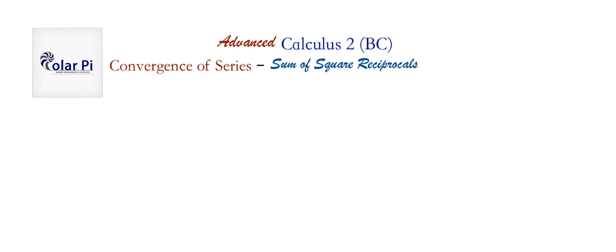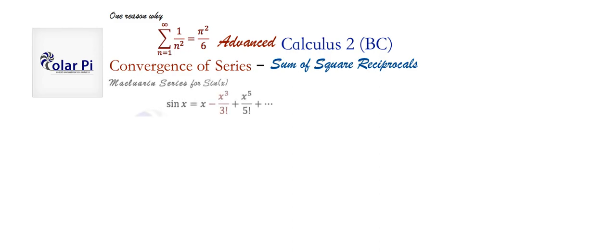Hey guys, welcome. In the video where we introduced the p-series, we said that in general there's no way for us to figure out the value of a particular p-series. But we said that when p is equal to 2, we have this infinite series — this p-series where p equals 2 — and we know that its value is pi squared divided by 6. There are generally two proofs provided for this fact: one is a more modern proof, and the other is much older, by Euler. I'm going to give you the older proof.